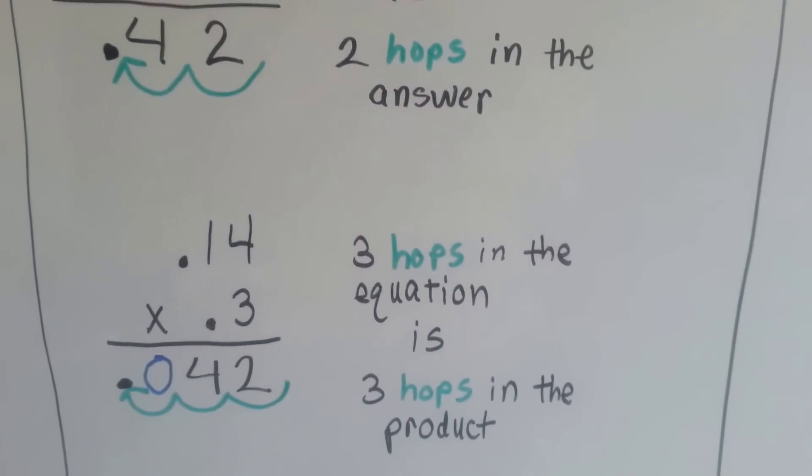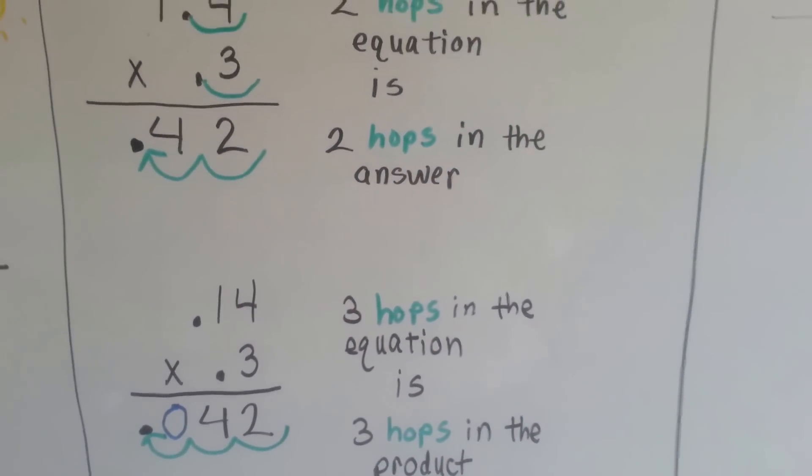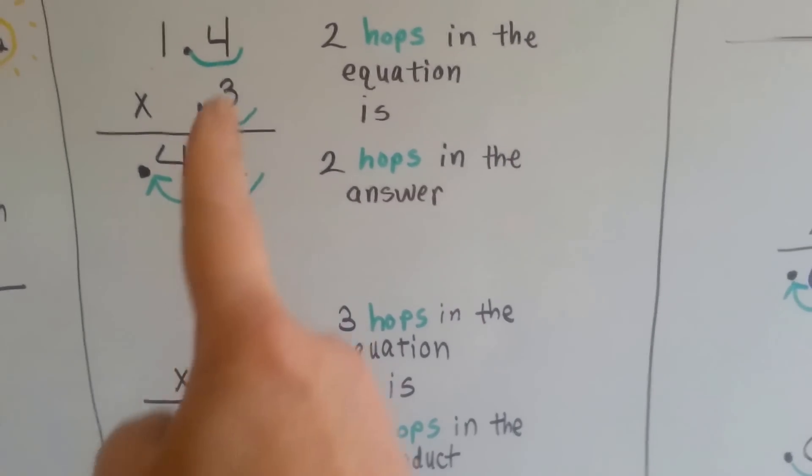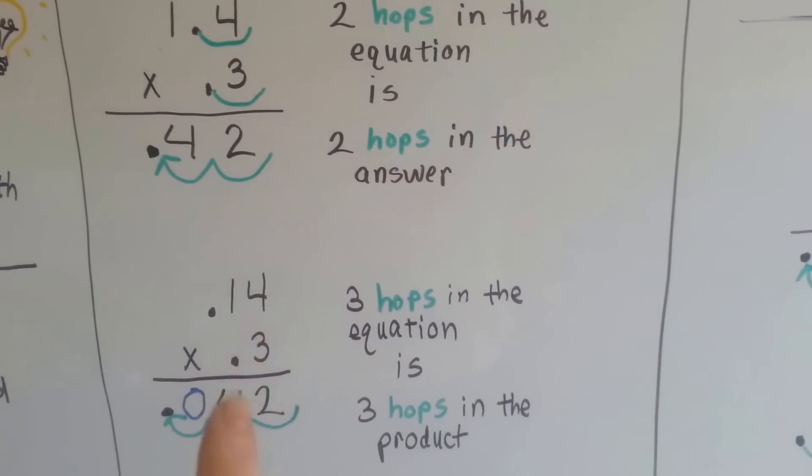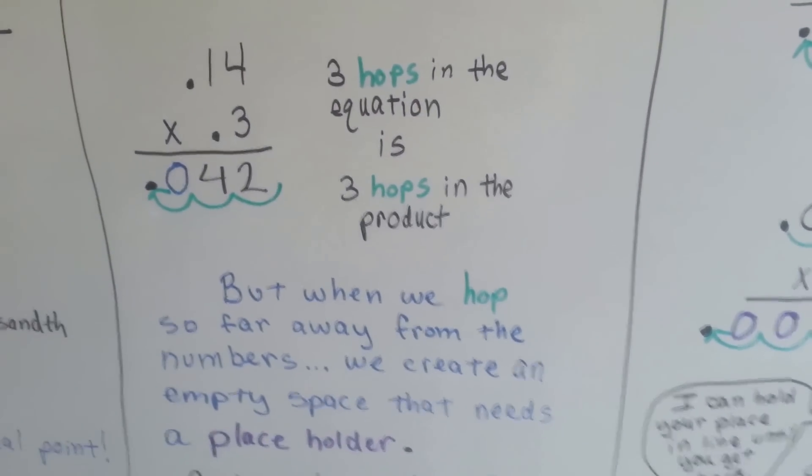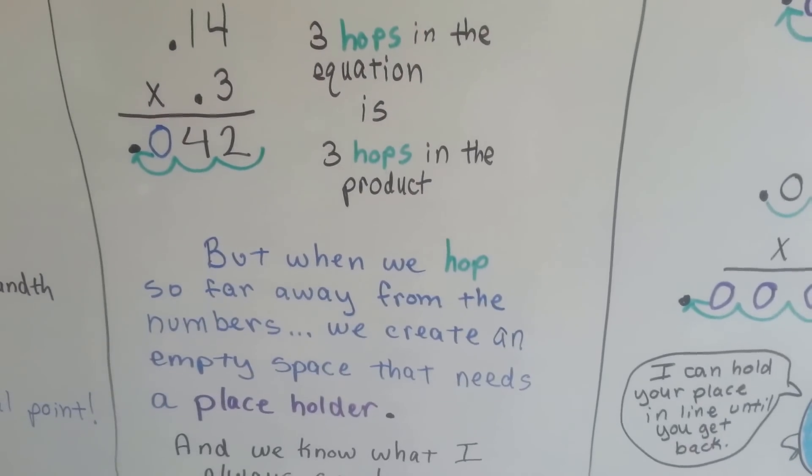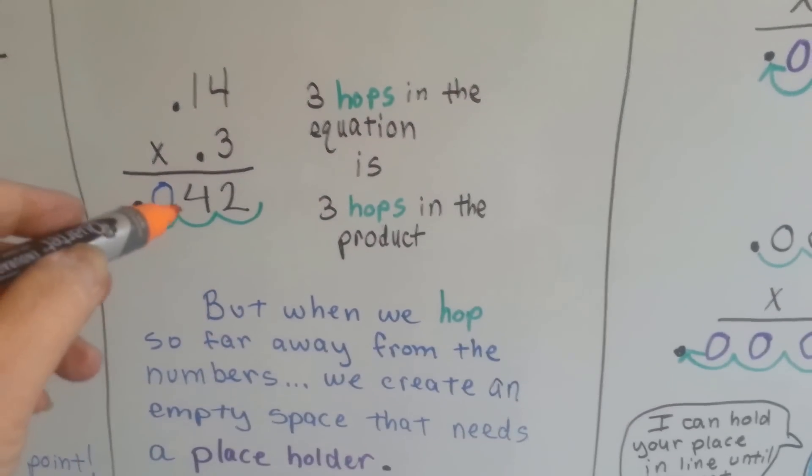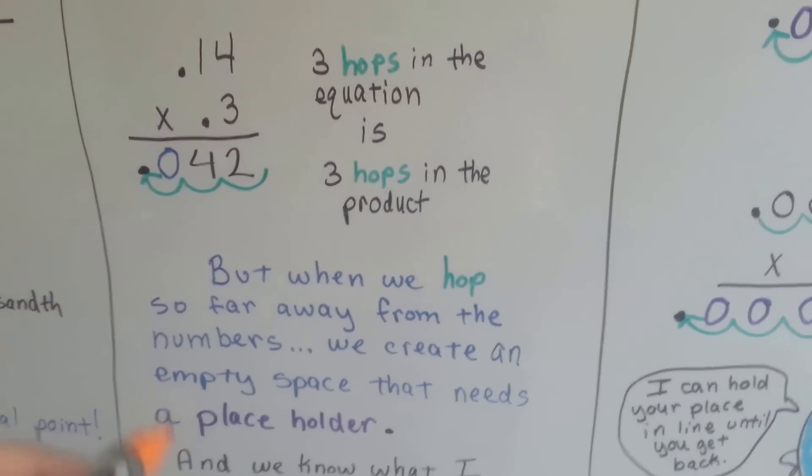When there's three hops in the equation, there's three hops in the product. Now we have 0.14 times 0.3. See? We move the decimal place over, so now there's one hop, two hop, three hop. So there's three hops in the product. But when we hop so far away from the numbers, we create an empty space that needs a placeholder. See? We hopped so far away from the four that there was an empty space here, and I needed to put a zero as a placeholder.